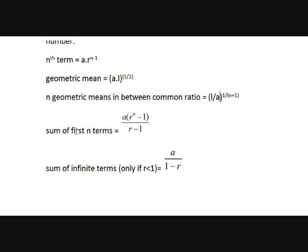What is the sum of first n terms? The sum of first n terms in a geometric progression is A into R to the power n minus 1, divided by R minus 1. Here also, the product of first and last terms is equal to the product of the mth term from the start and the mth term from the end. Then what is the sum of infinite terms? How is the sum of infinite terms possible if they keep on increasing? That's why we mention that R should be less than 1, where R is a positive real number.